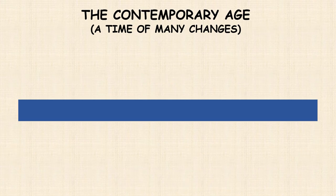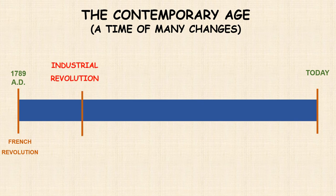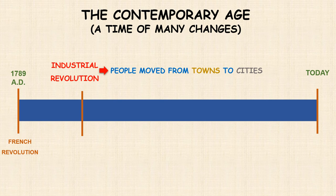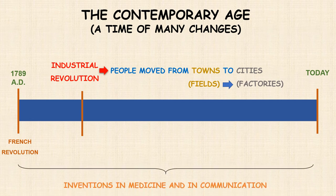The latest period is called the Contemporary Age and is considered a time of many changes. This period started in 1789 with the French Revolution and lasts to the present day. The most important changes started with the Industrial Revolution. A lot of people moved from towns to cities and exchanged rural jobs in the fields for factory jobs in the cities.